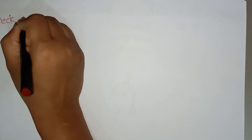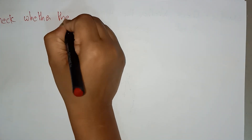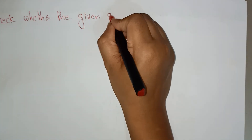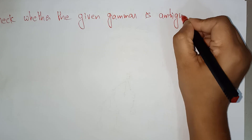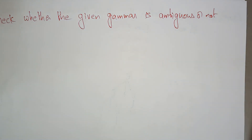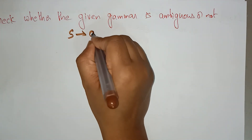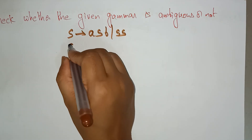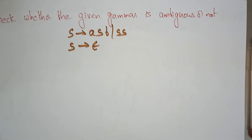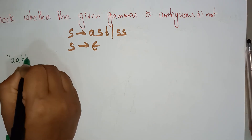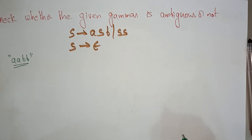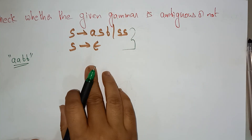Let me take one more example. By seeing this example, you will get a clear idea and be very confident about whether the grammar given is ambiguous or not — you can easily find it out. Check whether the given grammar is ambiguous or not. The grammar is: S determines A S B, or S S, and S determines epsilon. I am taking the string A A B B.